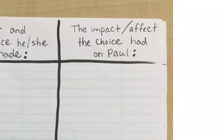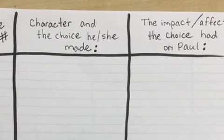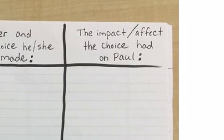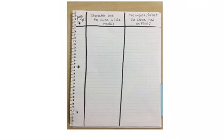And in the final column you will write these words: the impact or effect that the choice had on Paul, and you can see that this is the last column. This is the column all the way on the right and it's right next to the column that you just wrote. When you are completely finished setting up your notebook, this is what it should look like. Make sure that yours looks exactly like this because it will become very, very important to you.